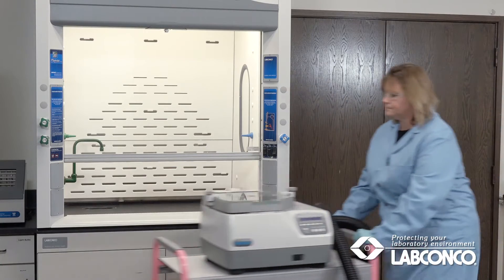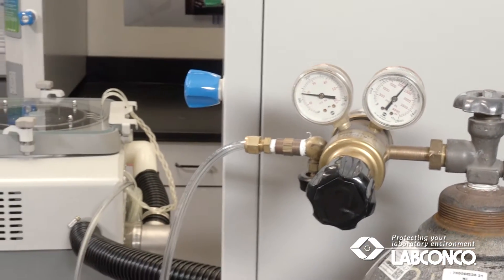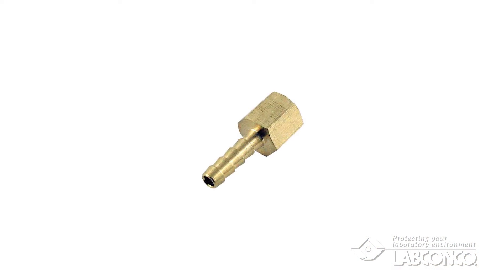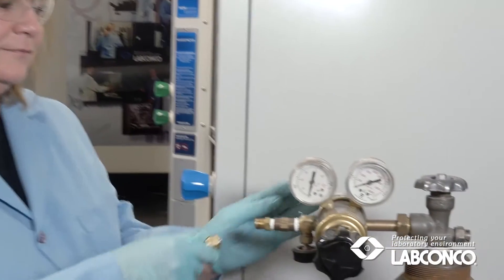Once the RapidVap is in place near a fume hood, the nitrogen will be connected. Install a barb fitting suitable for a 1¼ inch inside diameter hose into the out port of the regulator. Clamp it securely.